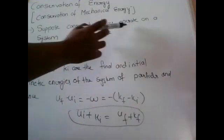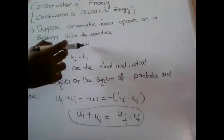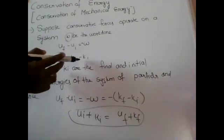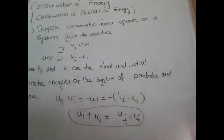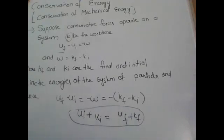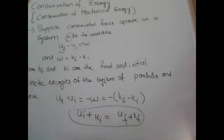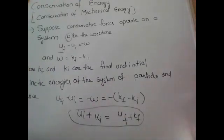Here we consider conservative forces operating on the system and W is the work done. We can write minus W equal to U_f minus U_i, and work done W equal to K_f minus K_i, where K_f and K_i are the final and initial kinetic energies. From that, U_f minus U_i equal to minus W, that means minus of (K_f minus K_i). From this, U_i plus K_i equal to U_f plus K_f.